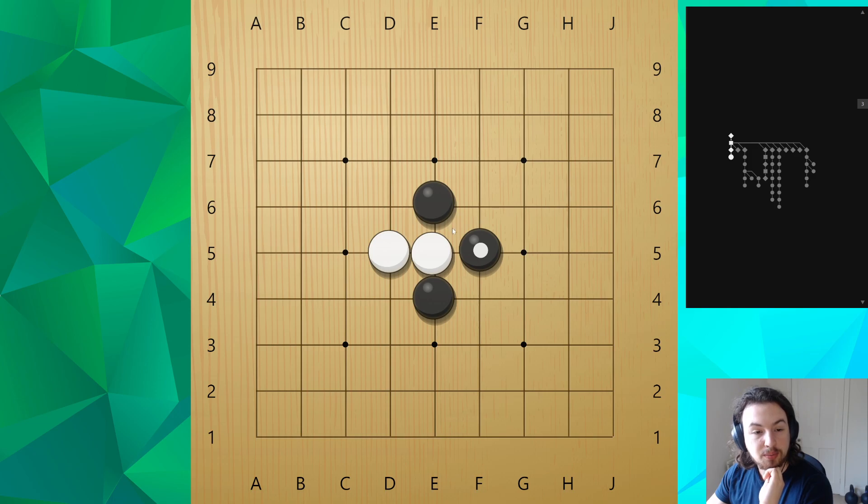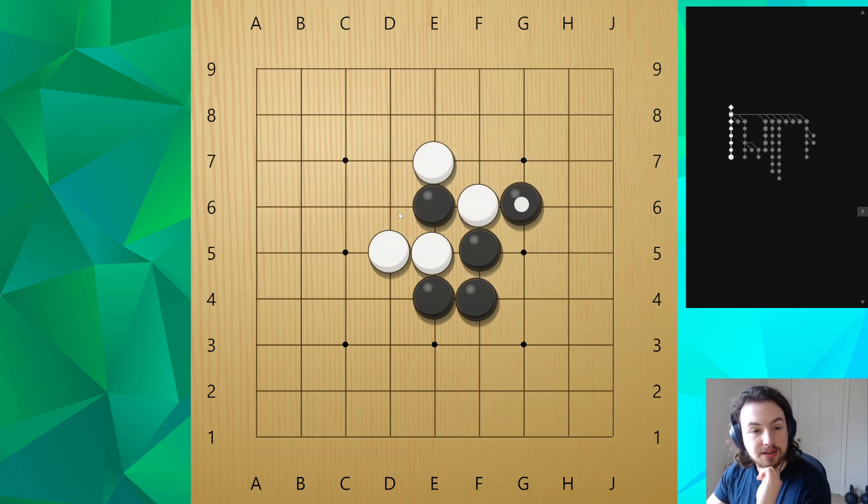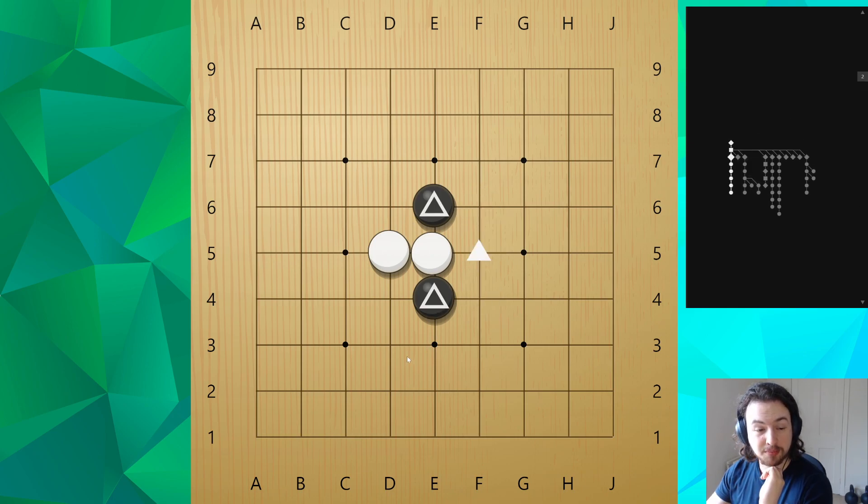Playing here is pretty important to stop white from breaking through. Black has a lot of cutting points on the outside, say over here, so white might be able to cut and capture. But this is still better than letting white come through completely.